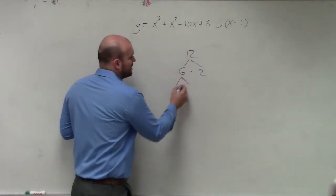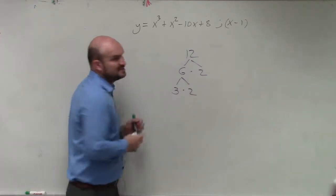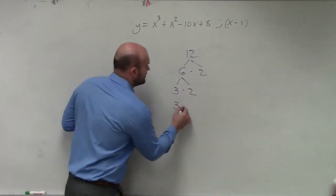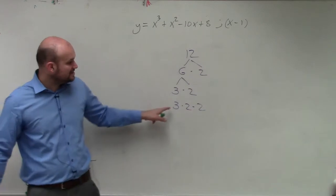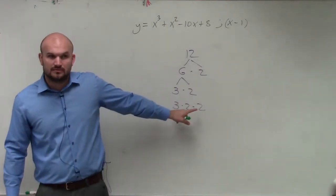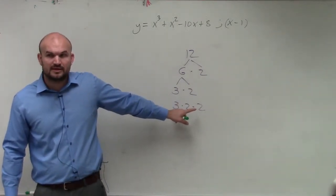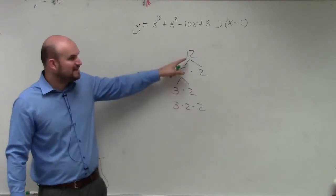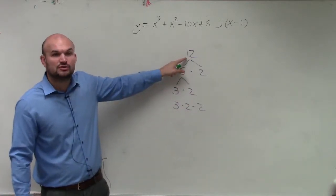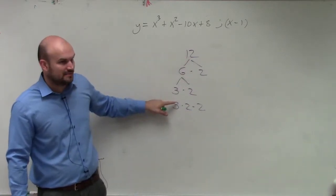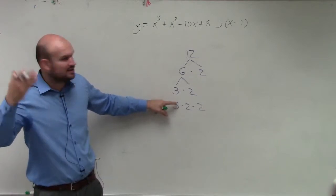Then you could break down 6 into 3 and 2. So therefore, what we call the prime factorization of 12 is 3 times 2 times 2. Does everybody agree with that? So that's basically like completely factoring the number 12. You're breaking it down into its prime numbers. That is numerically what we do with numbers.